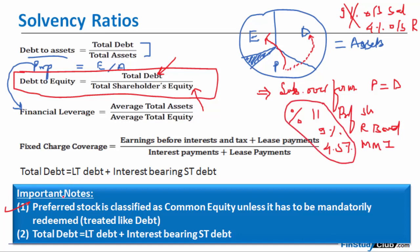Hence, total debt equals long-term debt plus interest-bearing short-term debt. The focus on interest-bearing is because we want to highlight the financial aspects out of those liabilities. This is very critical and important.